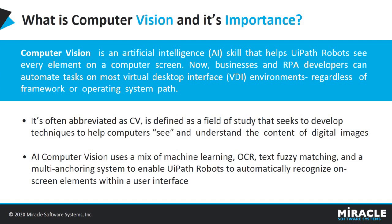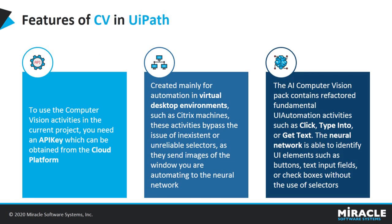Mainly, CV uses a mix of techniques which enables robots to automatically recognize on-screen elements. One key feature to note is that while using CV activities in a project, we need to assign an API key obtained from the cloud platform in the Computer Vision Project Settings property category. The AI Computer Vision pack contains UI automation activities. The main difference between CV activities and their classical counterparts is their usage of a CV neural network developed in-house by the machine learning department. Computer Vision is created mainly for automating virtual desktop environments such as Citrix sessions, solving the issue of unreliable selectors.